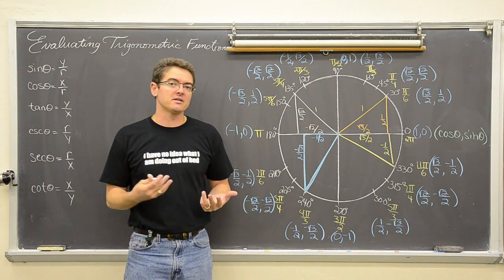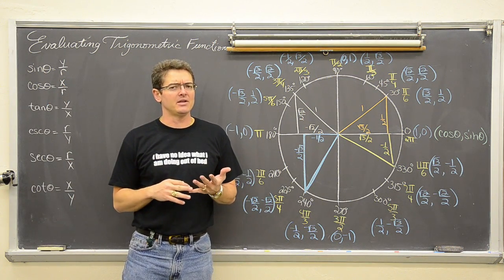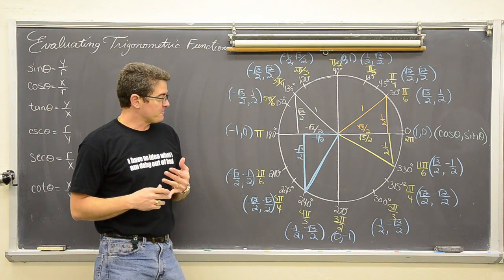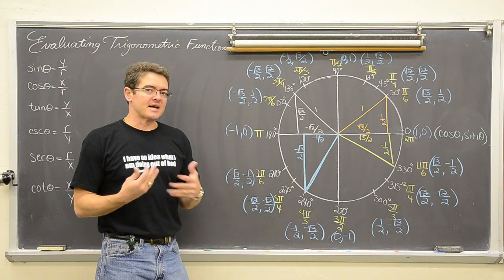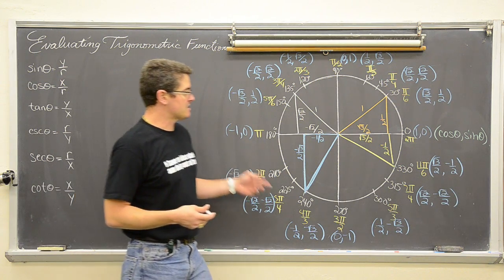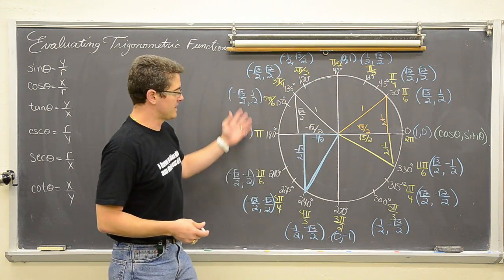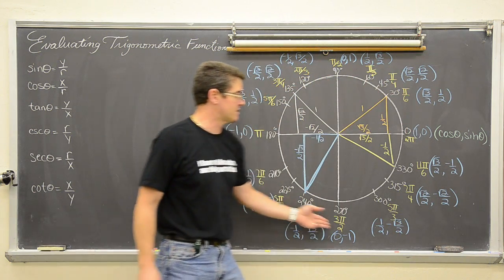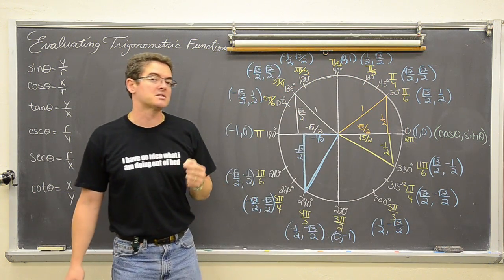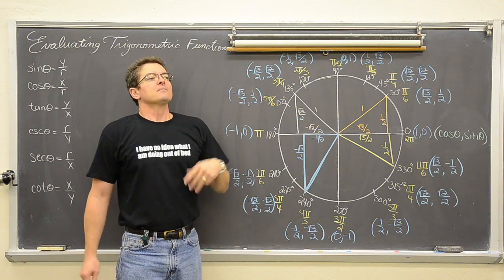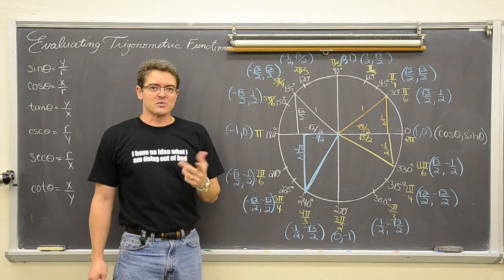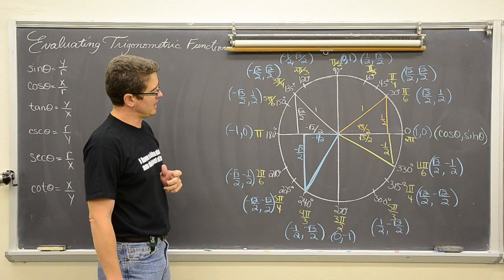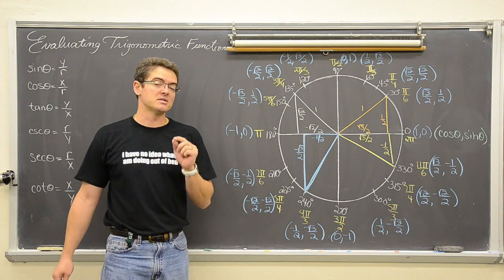We don't need to use a calculator, and most pre-calc and trig teachers should not be allowing you to use a calculator on these questions, because we don't want just a decimal punched out of a calculator. That's not going to show us that you know and understand this unit circle. So any trig or pre-calc question based off of one of these 16 angles should be left in exact form.